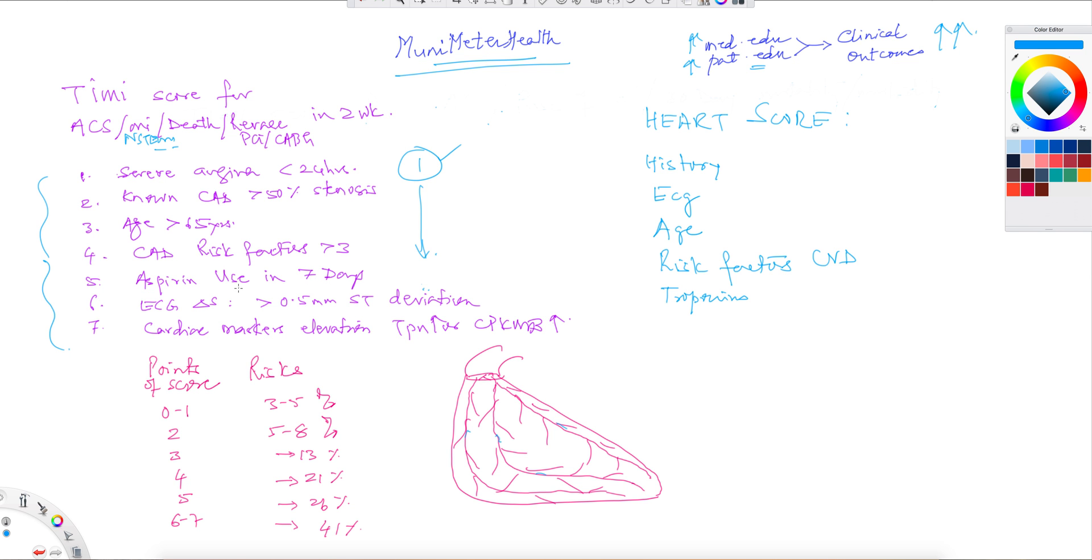Aspirin use is very significant. People don't ask the history of aspirin within the past seven days. If you have aspirin use within the seven days period, you could use another point here. ECG changes should be very significant in that it should be at least 0.5 millimeters either ST deviation upwards or downwards, elevation or depression. Either way, 0.5 millimeters should be considered as significant.